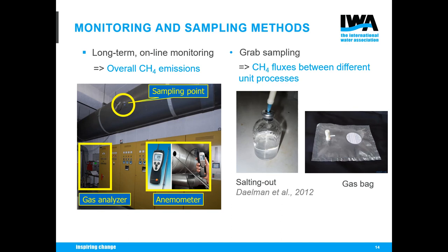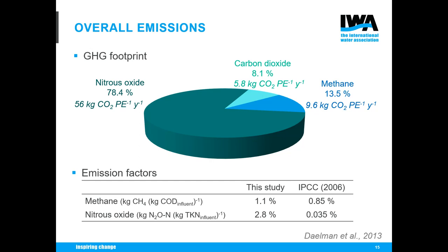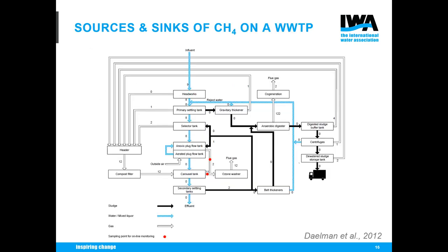To set up mass balances over different unit processes, we calculated the methane load in every liquid and gas stream. For dissolved methane, we used a salting-out method, analyzing the headspace with gas chromatography. Gas stream samples were taken in gas bags and also analyzed with GC. Overall results showed methane and nitrous oxide emissions at this plant were quite high, exceeding indirect CO2 emissions related to electricity consumption — and the emission factors exceeded IPCC values.